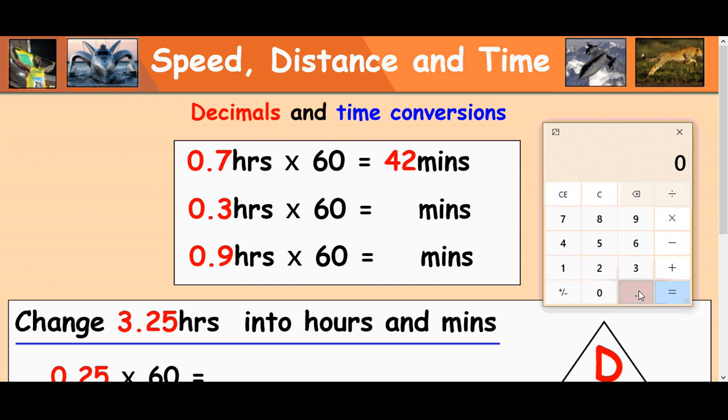So again, you can do that every time here. 0.3 times 60. 0.3 times 60. 18 minutes. And the last one, 0.9 times 60. And that's giving you 54.